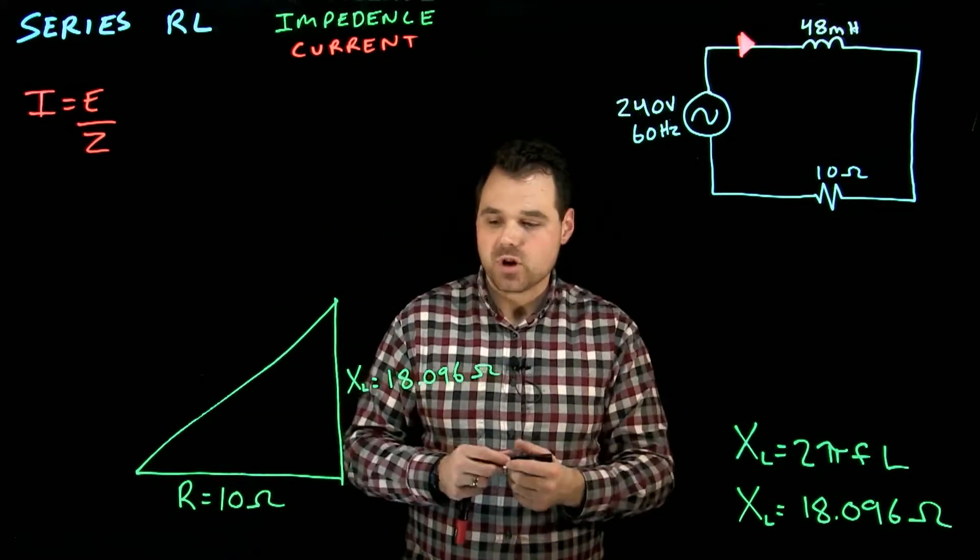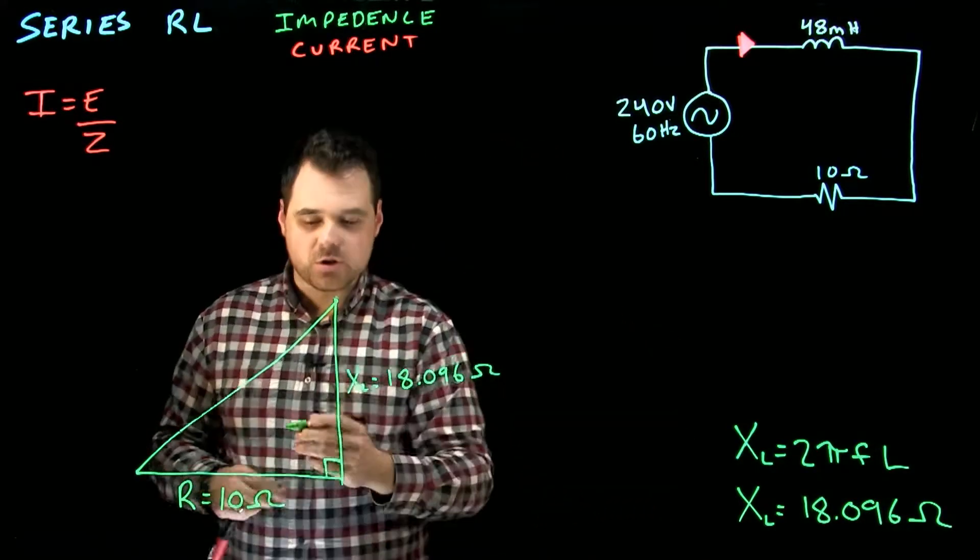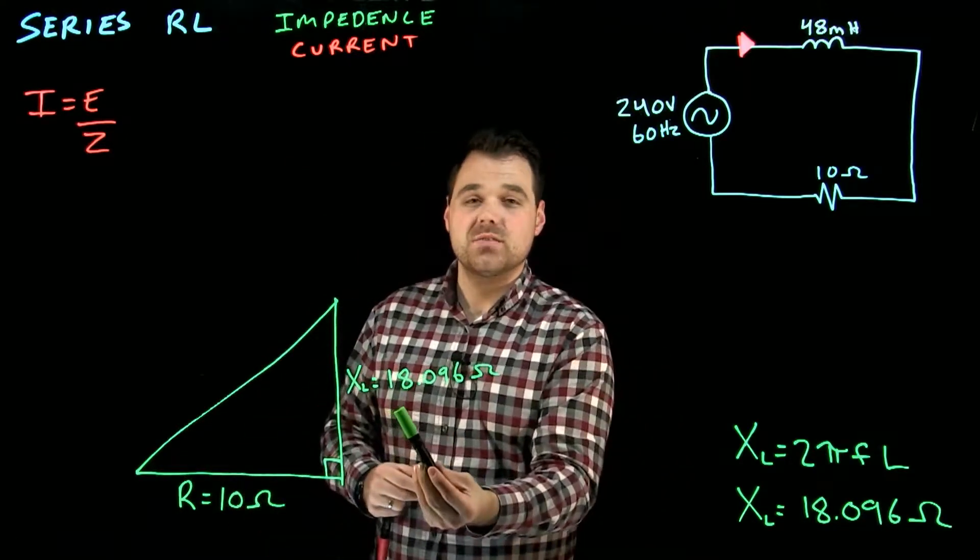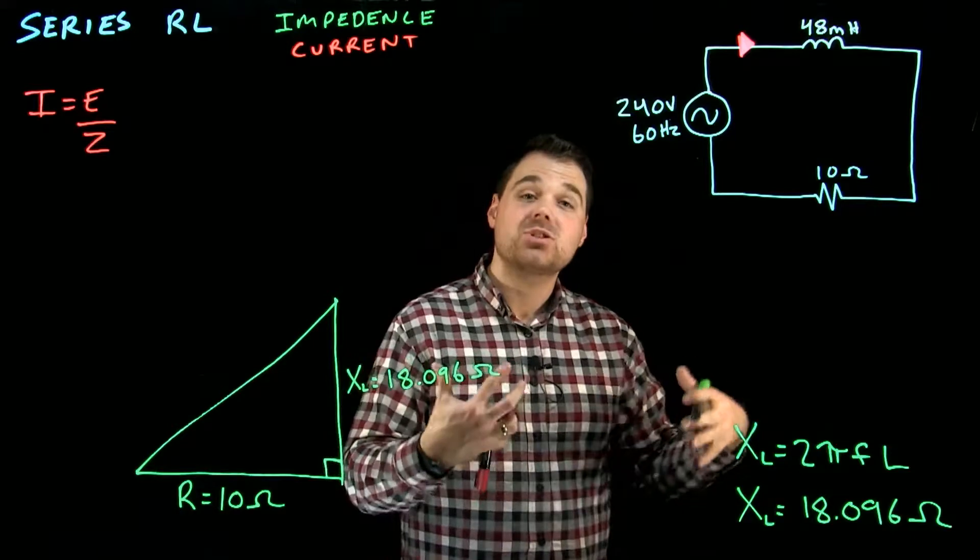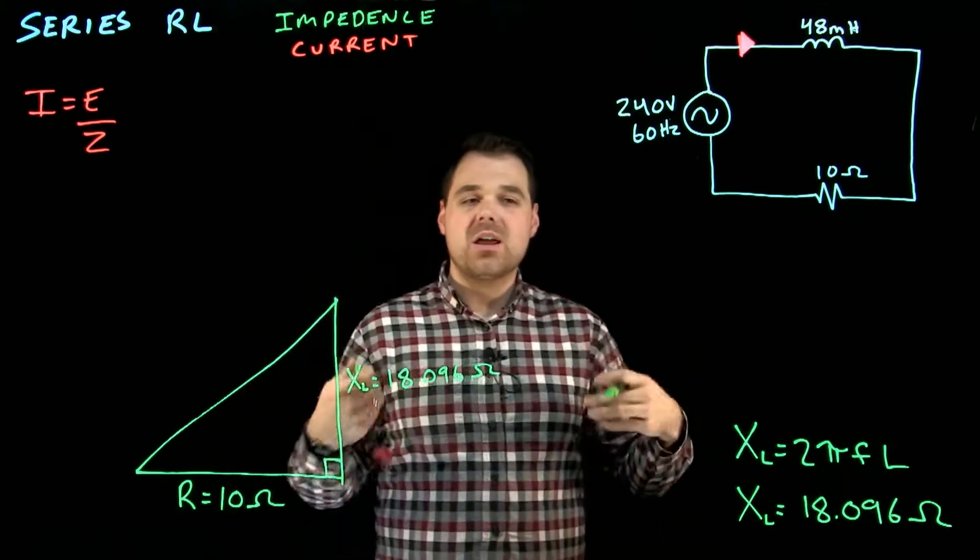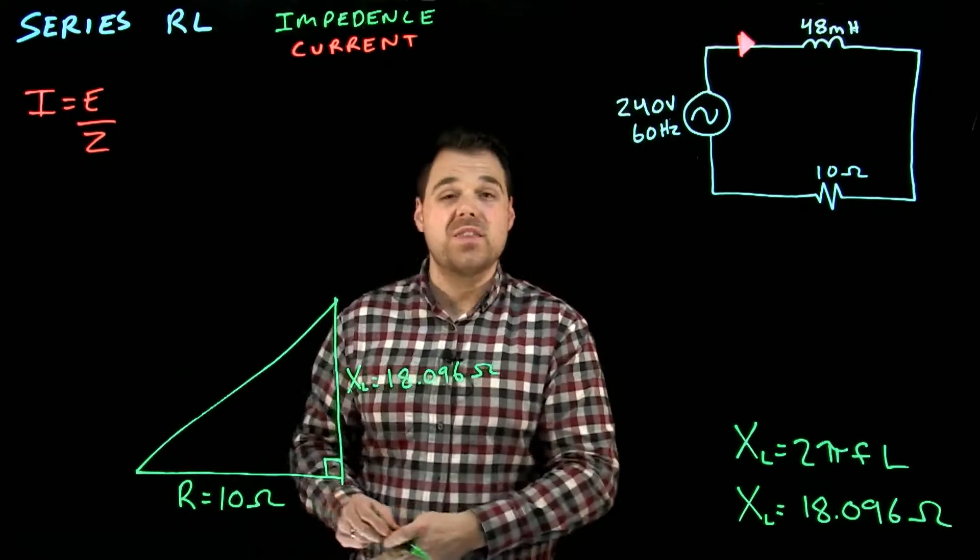Well, what we have to do when we have a triangle, and it would be a right angle triangle, our resistance is on the horizontal, our inductive reactants, or if you were doing a capacitor, our capacitive reactants would be on the vertical. We can add all those up using Pythagorean's theorem.